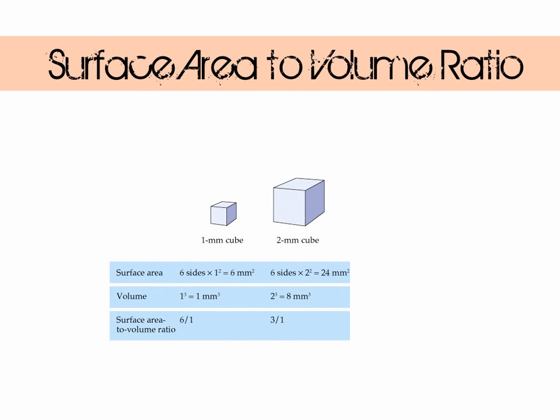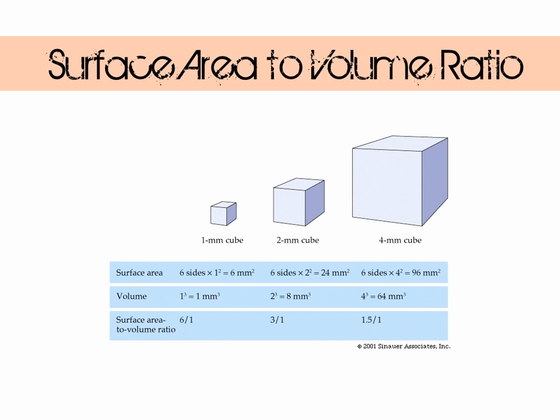Let's try that one more time. We're doubling the size of the cube again to 4 millimetres. Surface area is going to be 96 millimetres squared — that's a 4-fold increase. The volume has increased to 64 millimetres cubed, and that's a massive 8 times increase. The surface area to volume ratio is now 1.5 to 1. That's definitely getting smaller as the organism gets bigger.